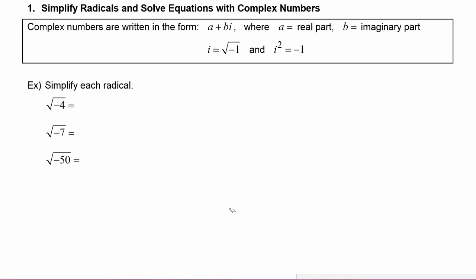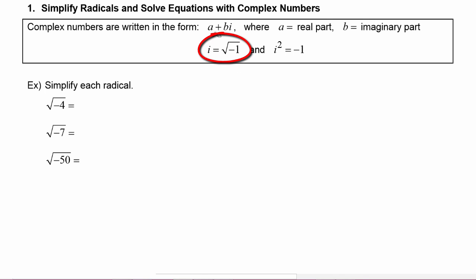Remember that complex numbers are written in the form a plus bi, where a is the real part, and b, which is the coefficient of i, is the imaginary part. In the complex number system, i stands for the square root of negative one, so that means i squared is equal to negative one.